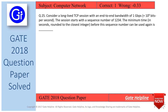Question number 25 is from computer networks. The question is: Consider a long-lived TCP session with an end-to-end bandwidth of 1 Gbps, that is 10 raised to power 9 bits per second. The session starts with a sequence number of 1234. The minimum time in seconds, rounded to the closest integer, before the sequence number can be used again is?